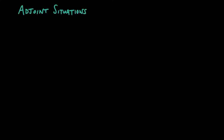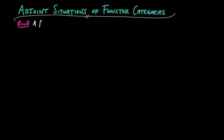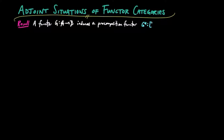In this video, we show how adjoint situations are preserved when passing to functor categories. Recall, a functor G induces a pre-composition functor G* from the functor category [B, E] to the functor category [A, E] for each category E. This functor takes a natural transformation β to βG.